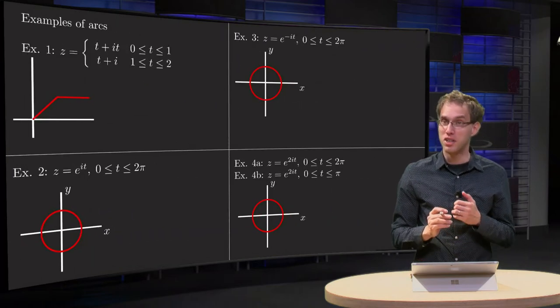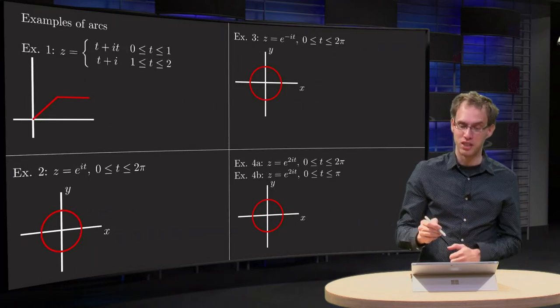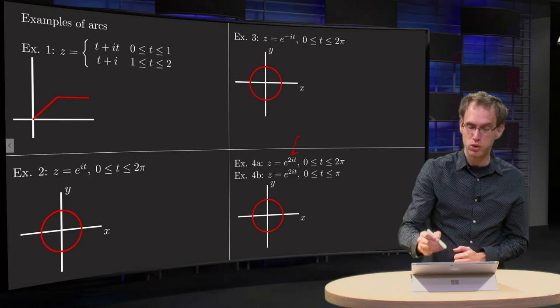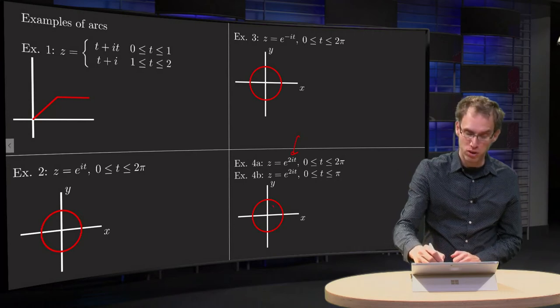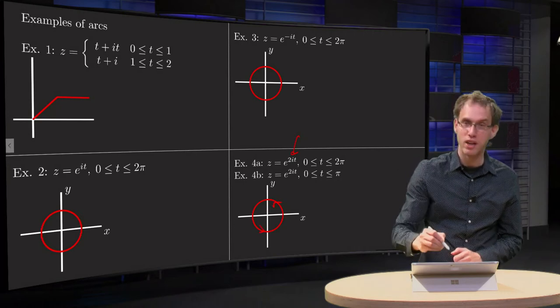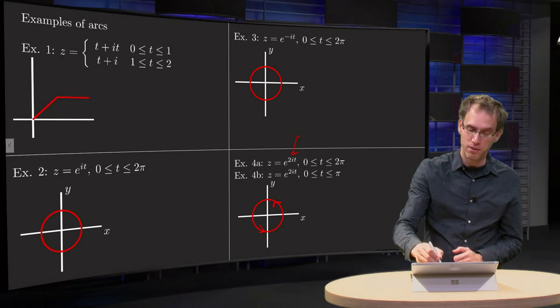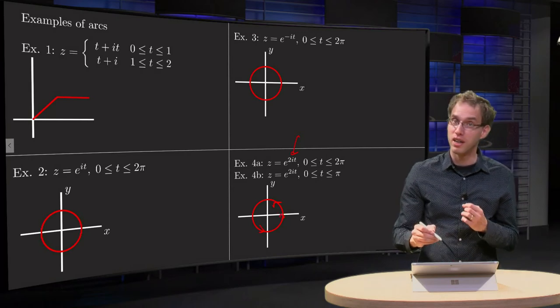And we have the same circle again, yet another parameterization. Now we pick e to the power of 2 i t, for t between 0 and 2π. Now we go twice as fast for the circle, so we go counterclockwise. If we are at π, we are at e to the power of 2π i again at 1.